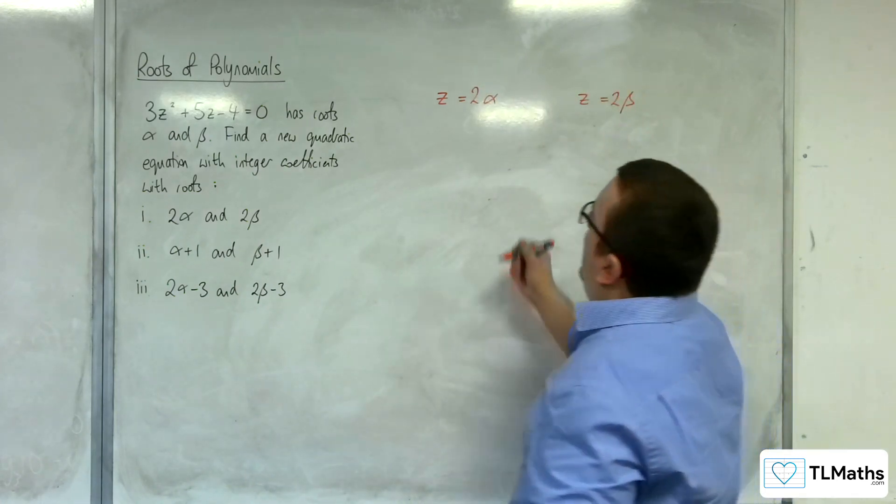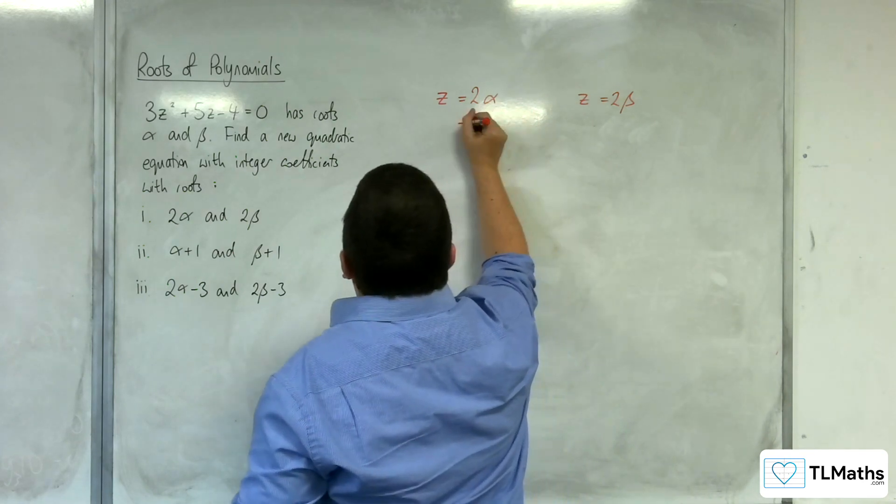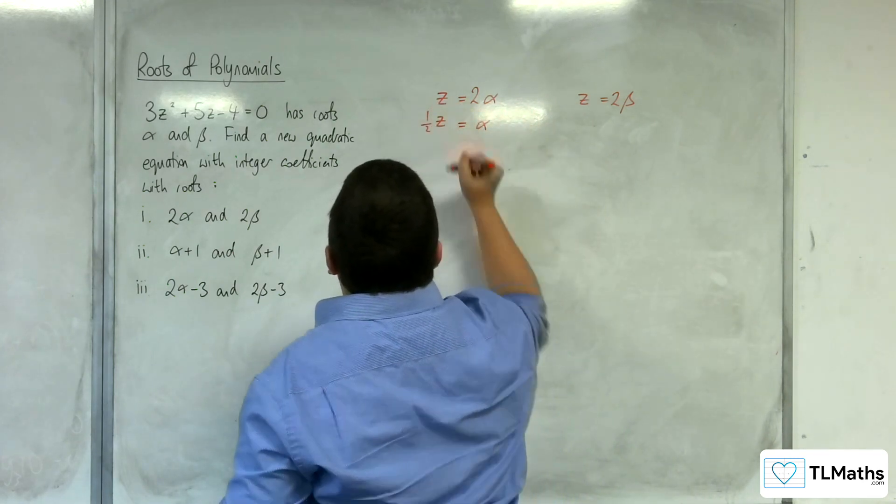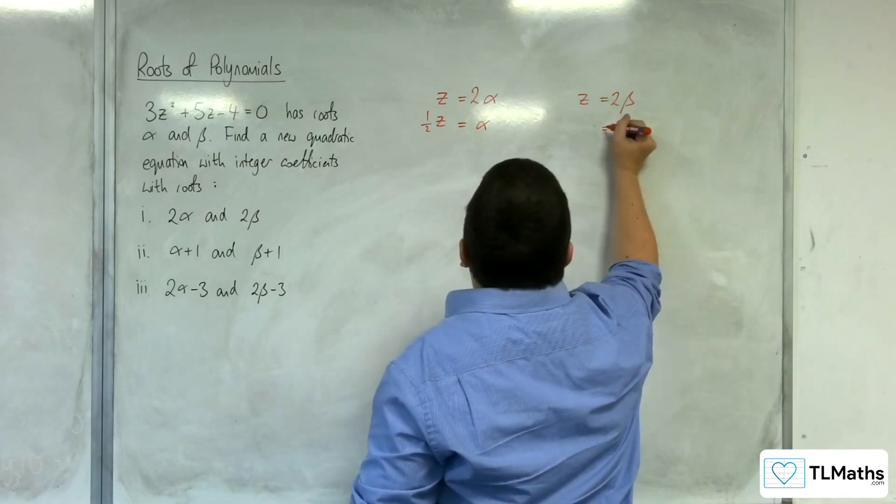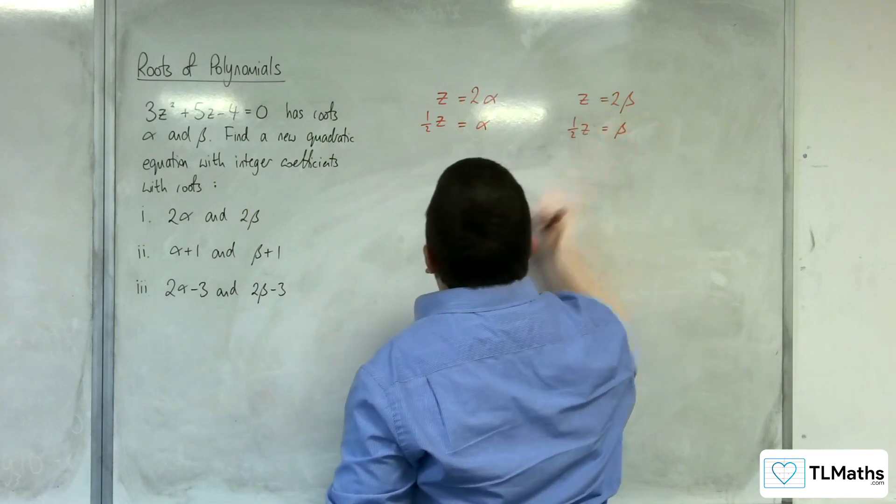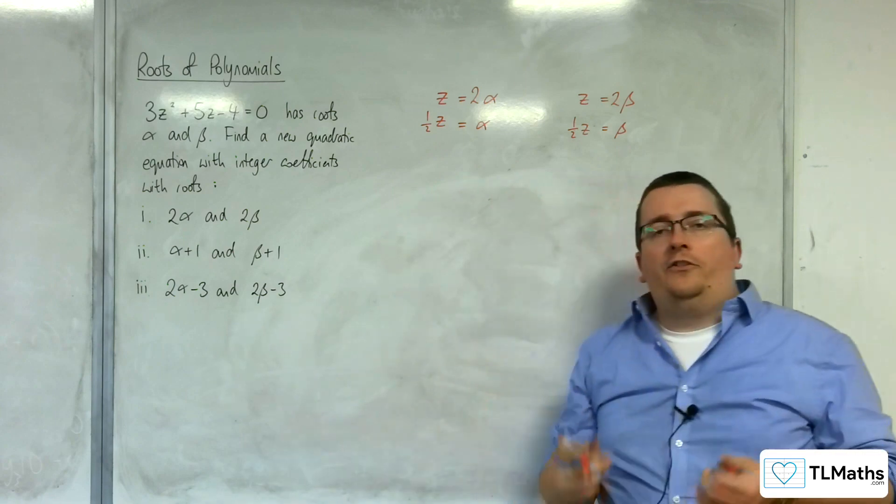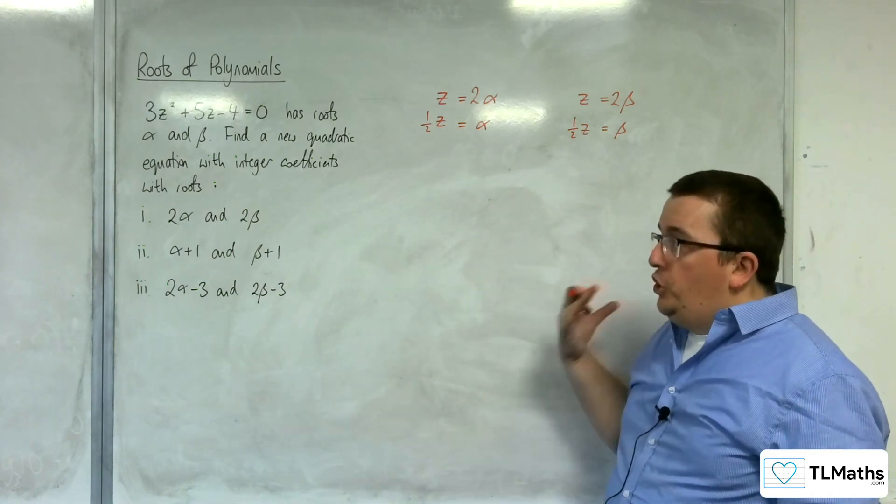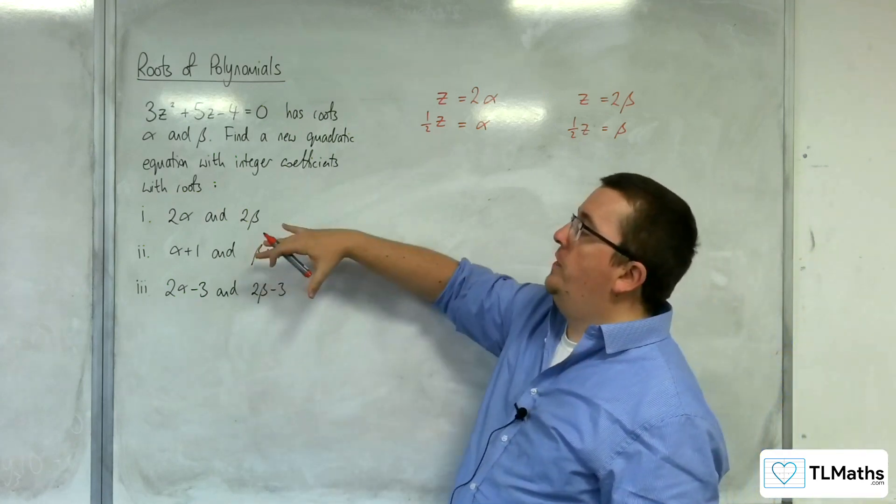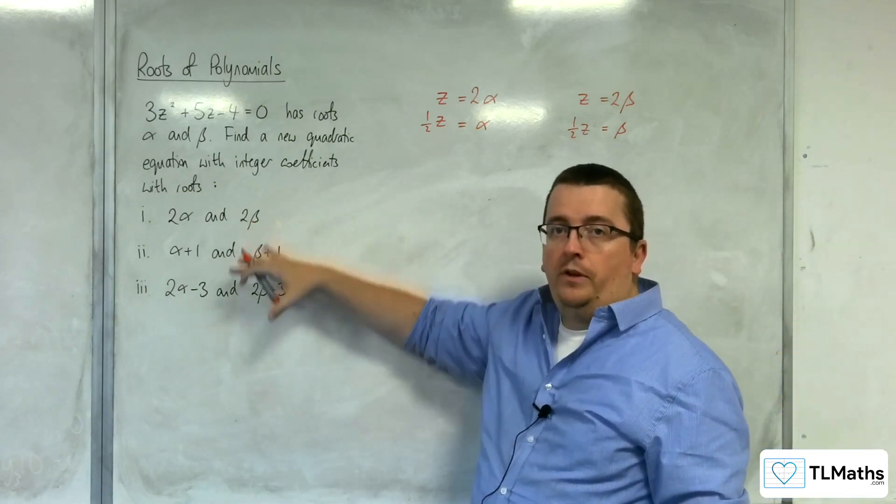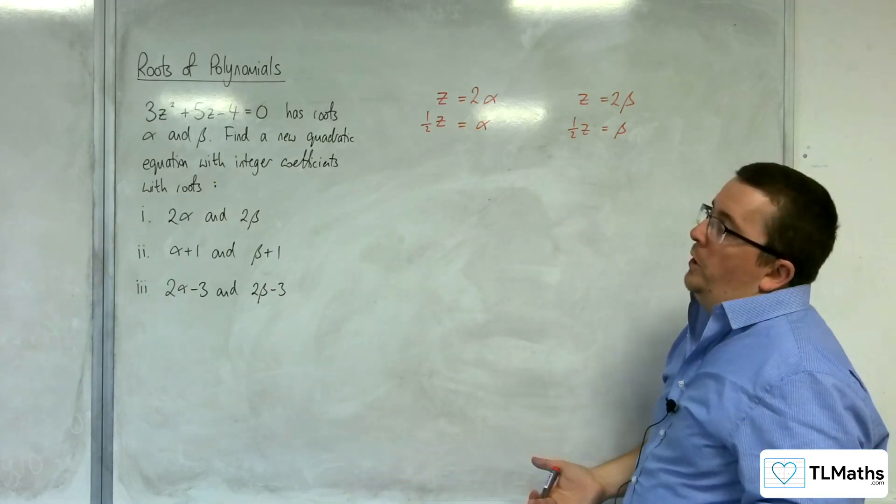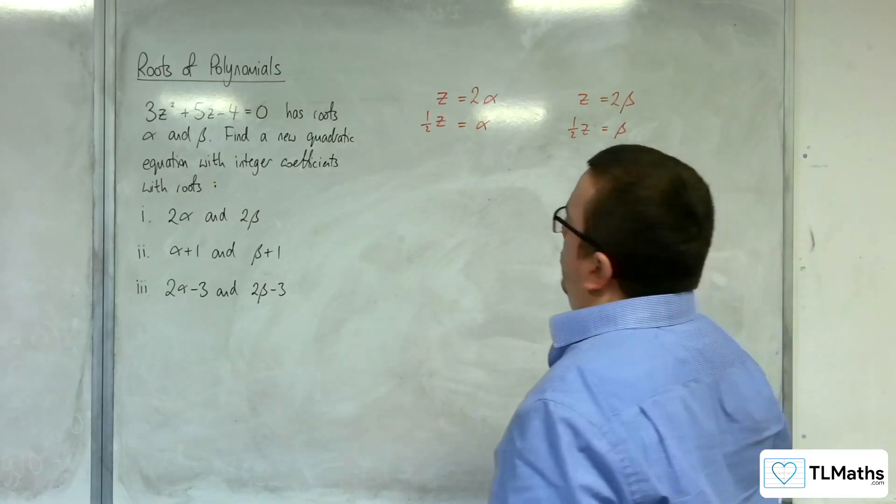So the consequence is that alpha would be z over 2, or let's write it as 1 half z, and beta would be 1 half z. So if I substitute for z 1 half z, I should end up with a quadratic equation that has those two as its roots. And we'll be able to double check that using our calculator's equation solver.